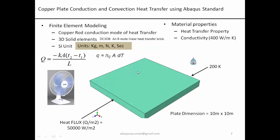We are going to put a fan on the top surface. This fan will have a low speed giving one heat transfer coefficient, and at a higher speed it will have a different heat transfer coefficient. You will learn how h changes the temperature distribution within the plate. We'll use eight-noded linear heat transfer brick elements.